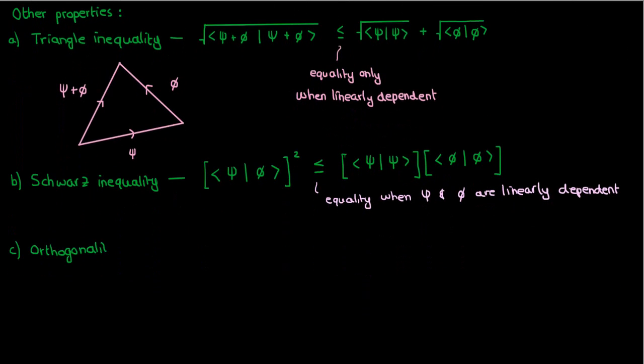Lastly, we'll briefly touch on orthogonality and orthonormality. Two vectors are orthogonal if their inner product is zero. In real space, this just means that they're perpendicular to each other, or they form a 90-degree angle with each other.